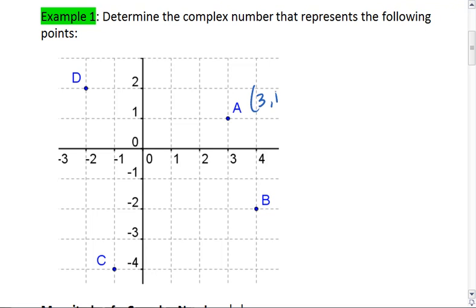For a, we have 3, 1. b is 4, negative 2. c is negative 1, negative 4. And d is negative 2, 2.